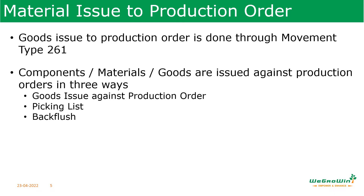Material issue to production orders can be done in three ways: one is goods issue against production order, that is manually; or through picking list to the production orders; or through back flush. All three methods we will discuss now.